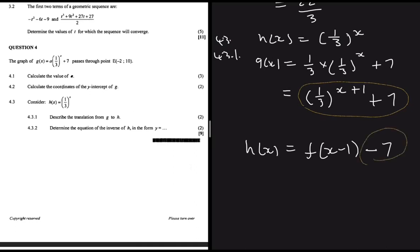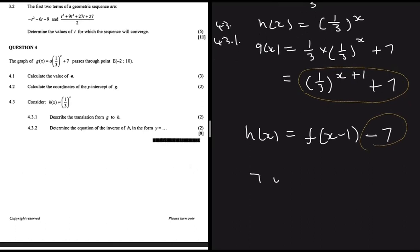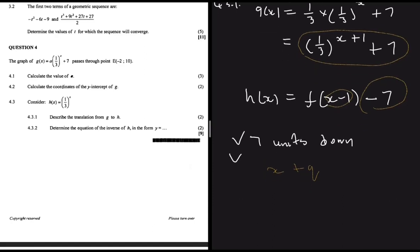To summarize the translation: if we have x + q, a positive q moves the graph left and a negative q moves it right. Since we have x - 1, the graph moved one unit to the right. Combined with the -7, g was moved one unit right and seven units down to obtain h.